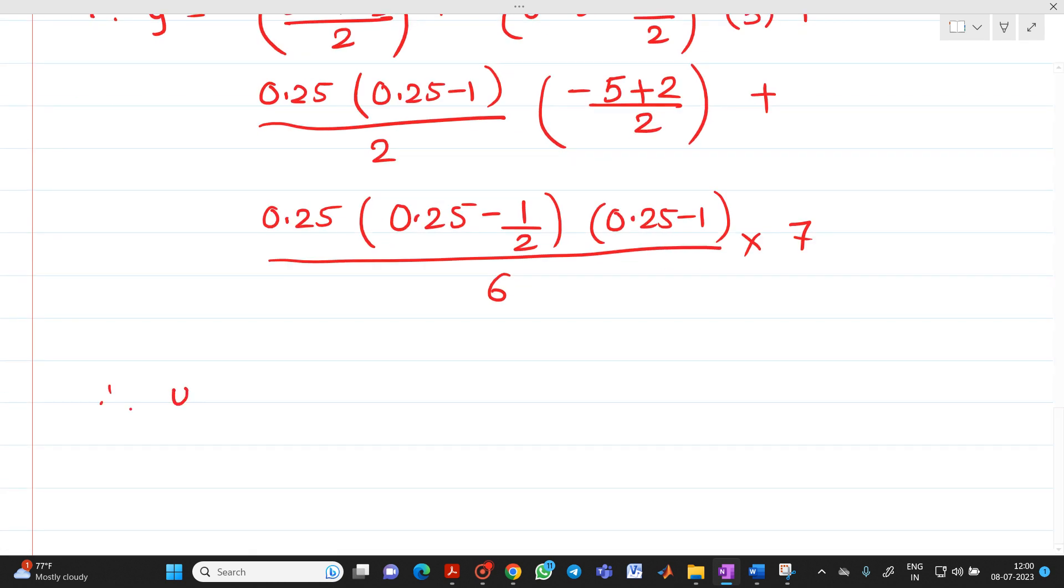So if you solve it term by term, we will get first 33.5, second will be -0.75, third will be 0.140625 plus fourth term will be 0.05468.